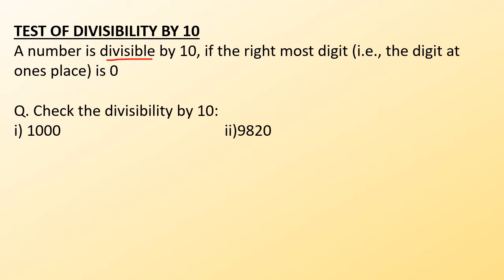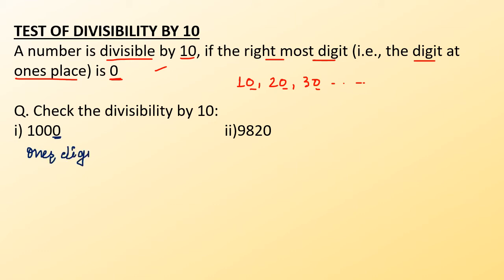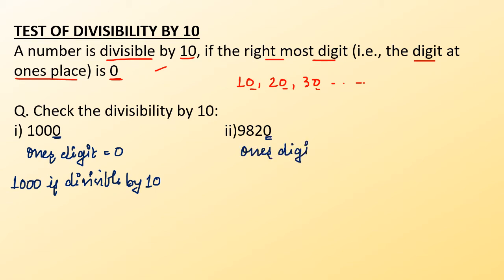A number is divisible by 10 if the rightmost digit — the digit at the 1's place — is 0. As we know, in the 10's table we have 10, 20, 30 — all numbers with 0 at the 1's place. So any number with 0 at the 1's place is divisible by 10. Here the first number is 1000, and the digit at the 1's place is 0, so 1000 is divisible by 10. Similarly, 9820 has 0 at the 1's place, so it is also divisible by 10.